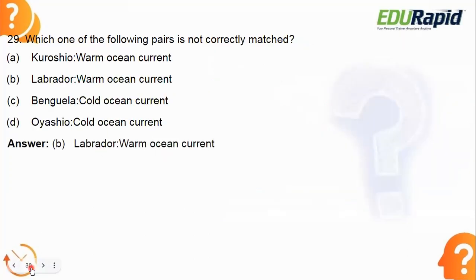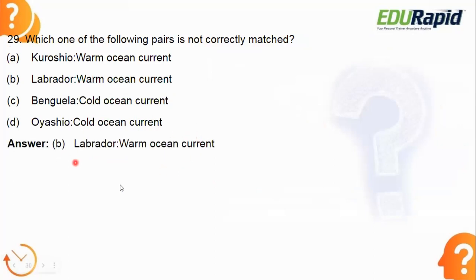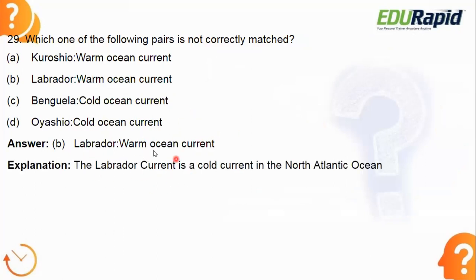Next: which one of the following pairs is not correctly matched? The answer is option B — Labrador is listed as a warm ocean current, but in fact the Labrador Current is a cold ocean current in the North Atlantic Ocean. We already studied this in the previous question. That is why it is not correctly matched.